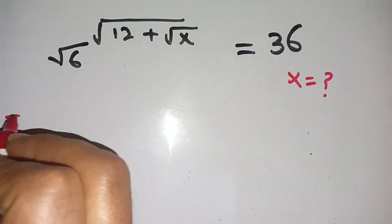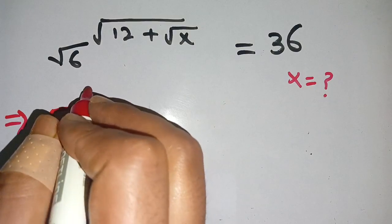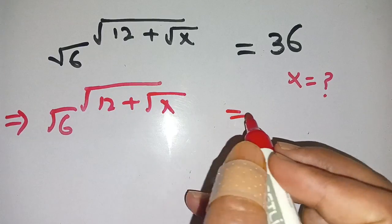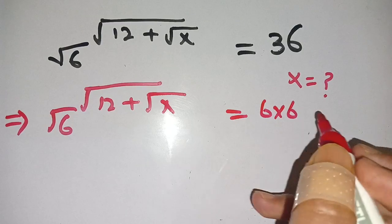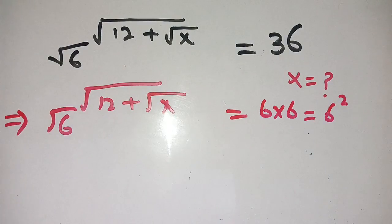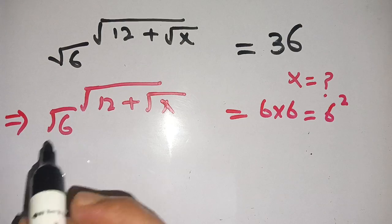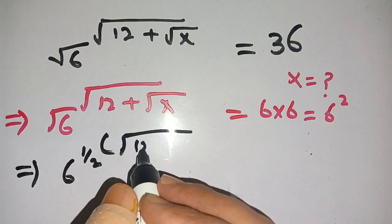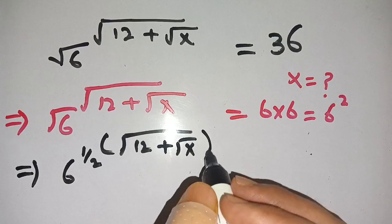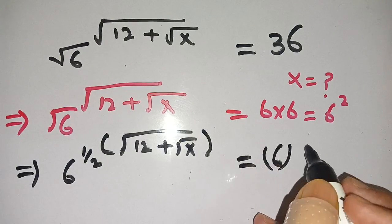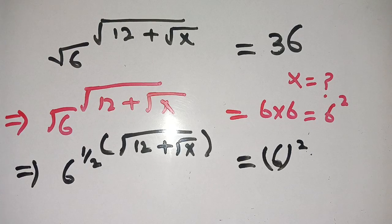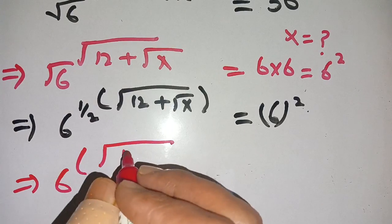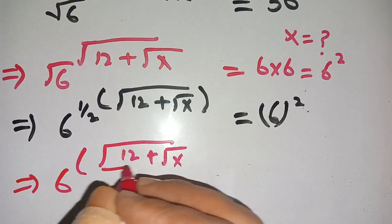Now let us solve this. We can write square root of 6 as 6 to the power 1/2, so the expression becomes 6 to the power 1/2, raised to the power of square root of 12 plus square root of x, which equals 36. We can also write 36 as 6 squared. The left side becomes 6 to the power of square root of 12 plus square root of x, divided by 2, equals 6 squared.